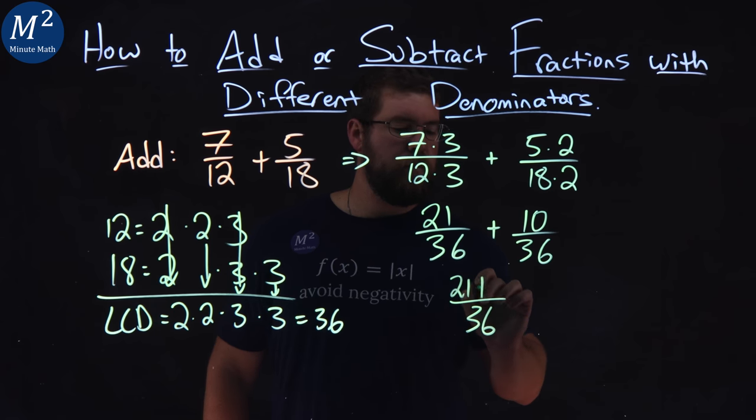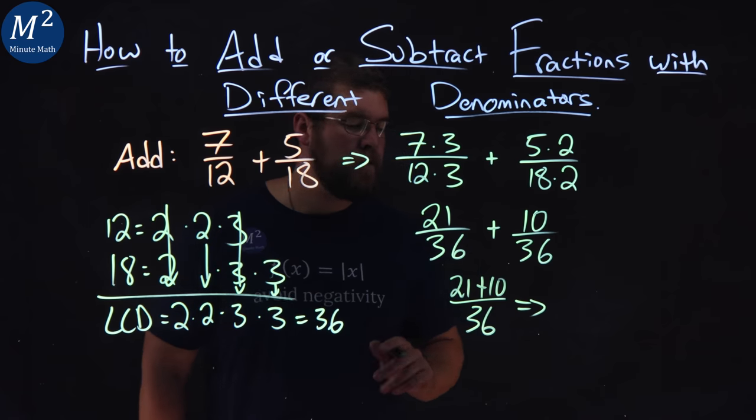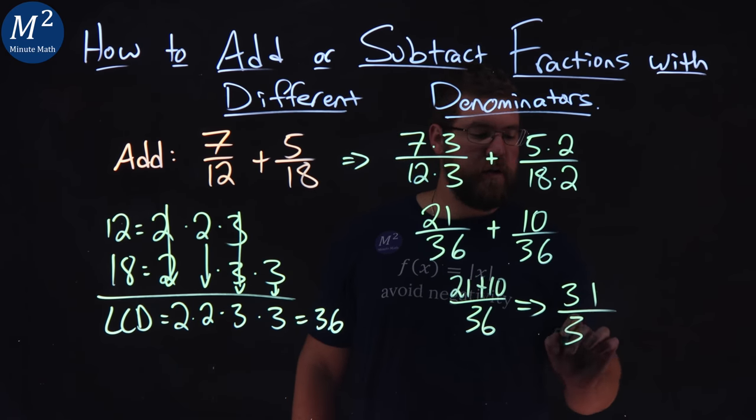We have 21 plus 10 in the numerator. From there, 21 plus 10 simplifies to be 31 over 36.